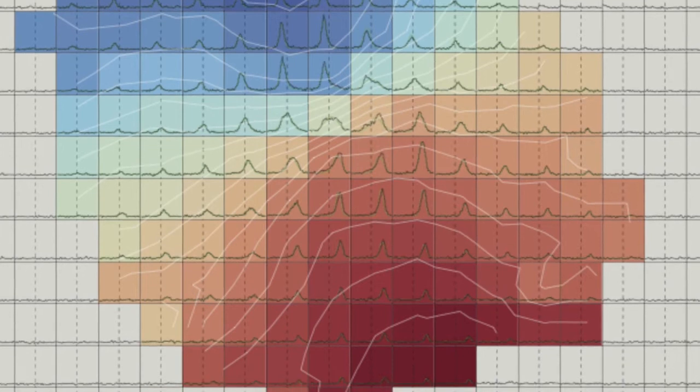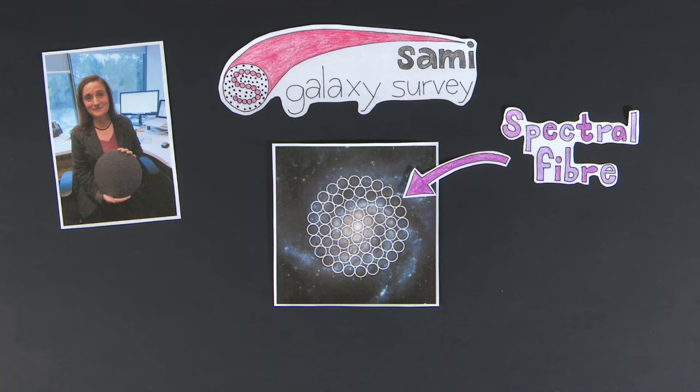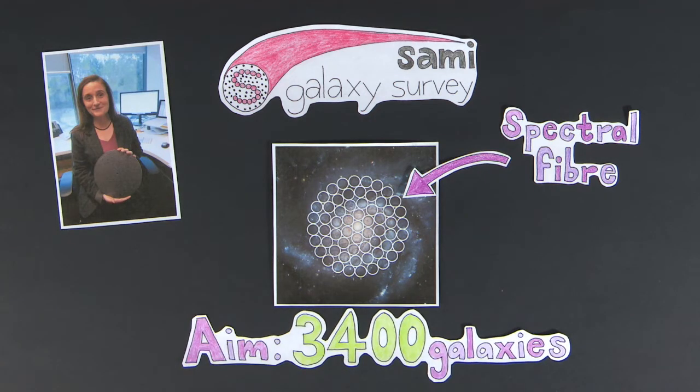Due to SAMI instrument's capability of observing 12 galaxies simultaneously, the SAMI survey proposed to observe 3400 galaxies, an order of magnitude more galaxies than predecessor IFU surveys.